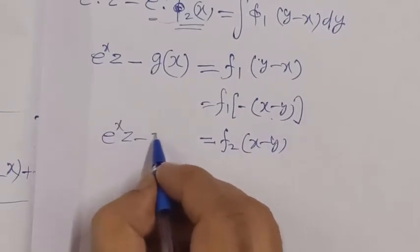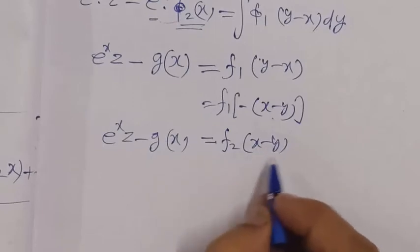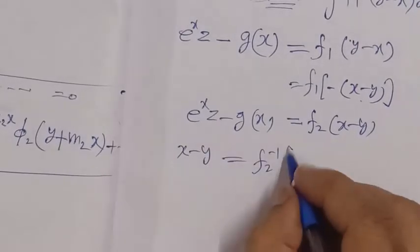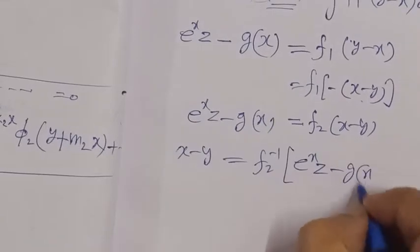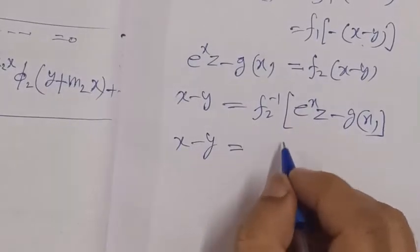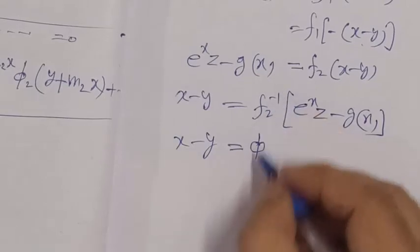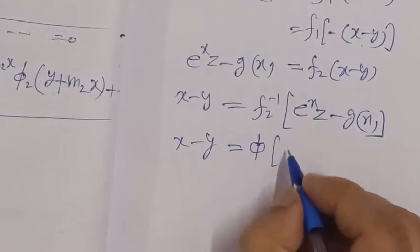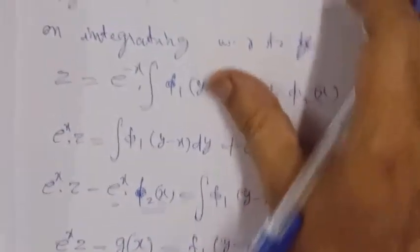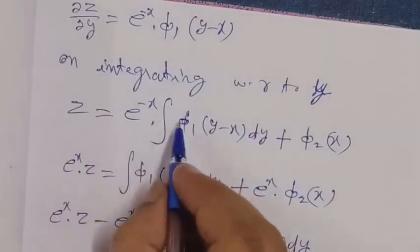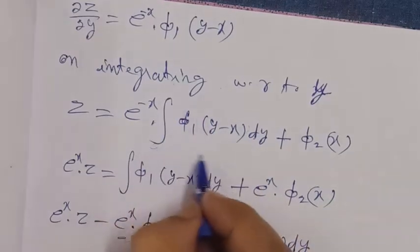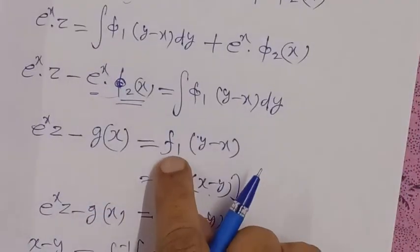Left-hand side is e to the power x times z. If we find e to the power x times z, we need to integrate. We need a function that will operate on e to the power x times z, and we need to integrate with respect to x. On integration, if we integrate with respect to x, we employ a function of a function. We are done, we completed it.